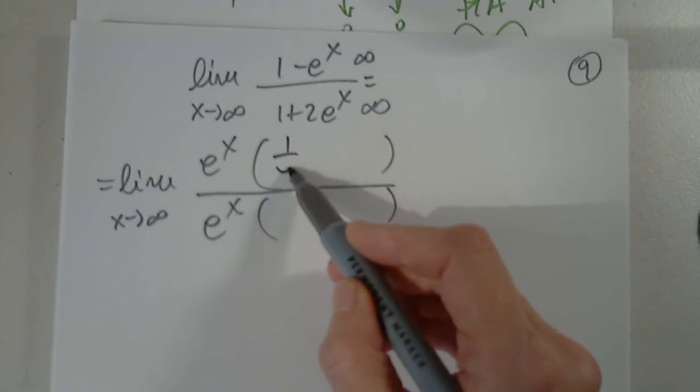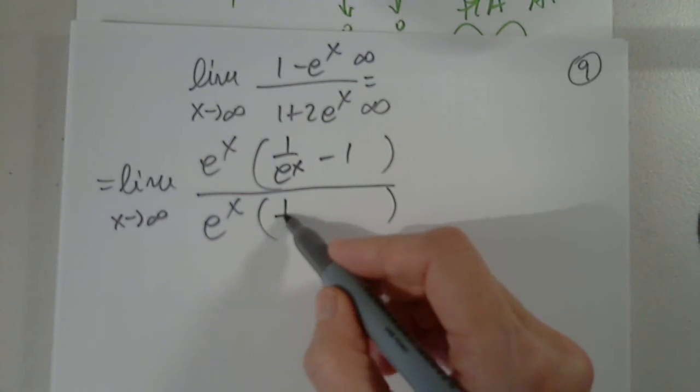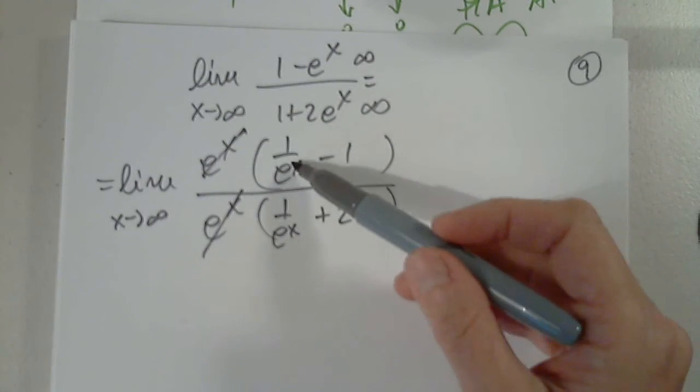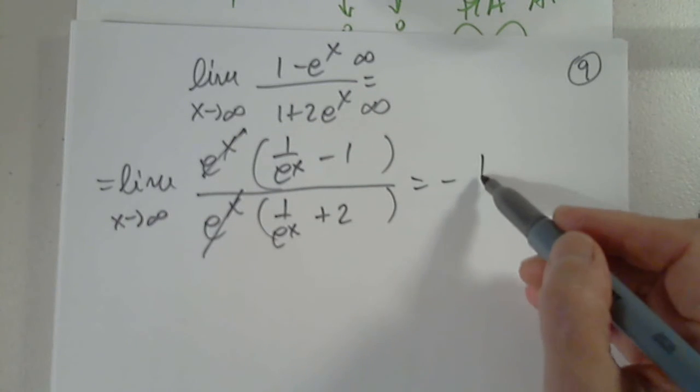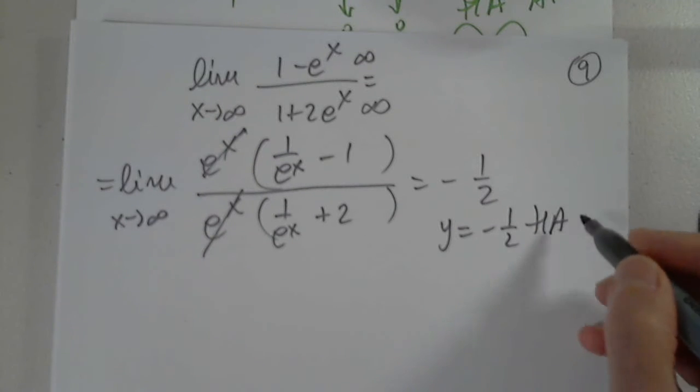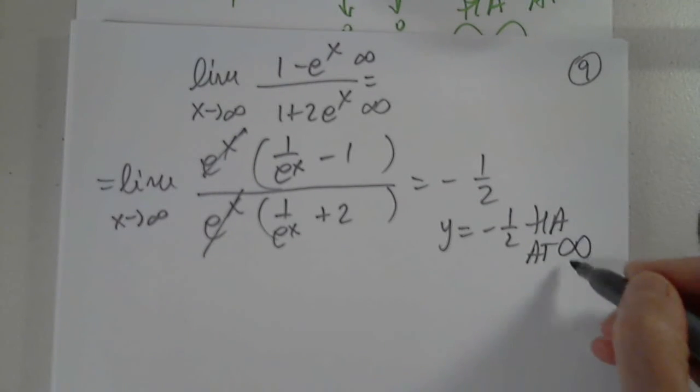So 1 over e to the x minus 1, 1 over e to the x plus 2. This approaches 0, this approaches 0. So it's negative 1 half. So y equals negative 1 half horizontal asymptote at infinity.